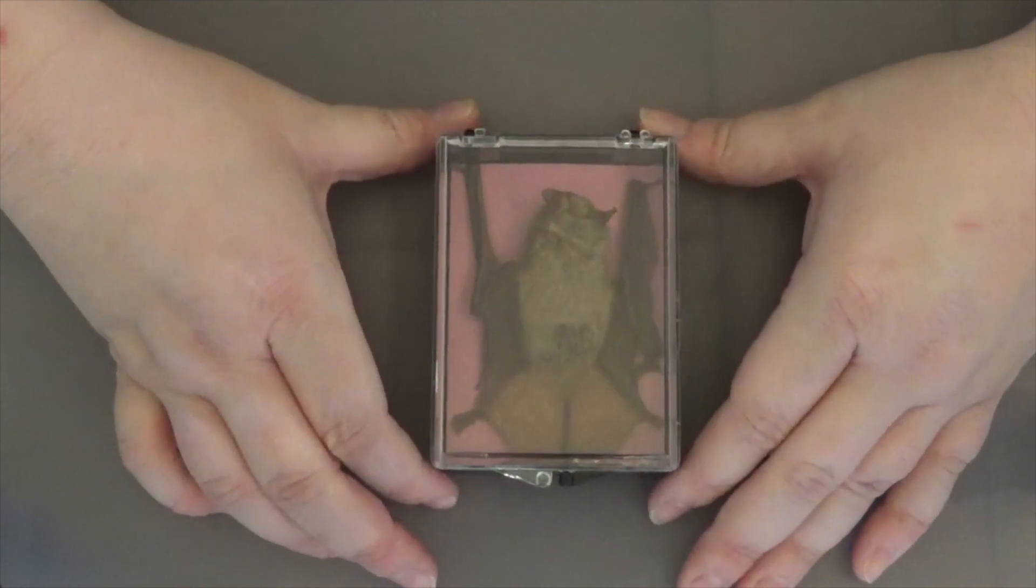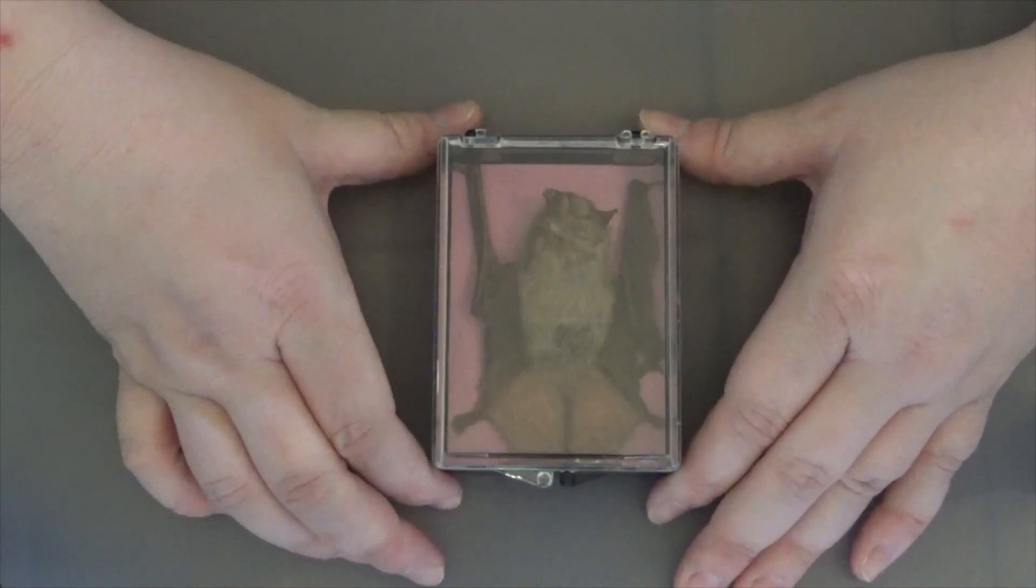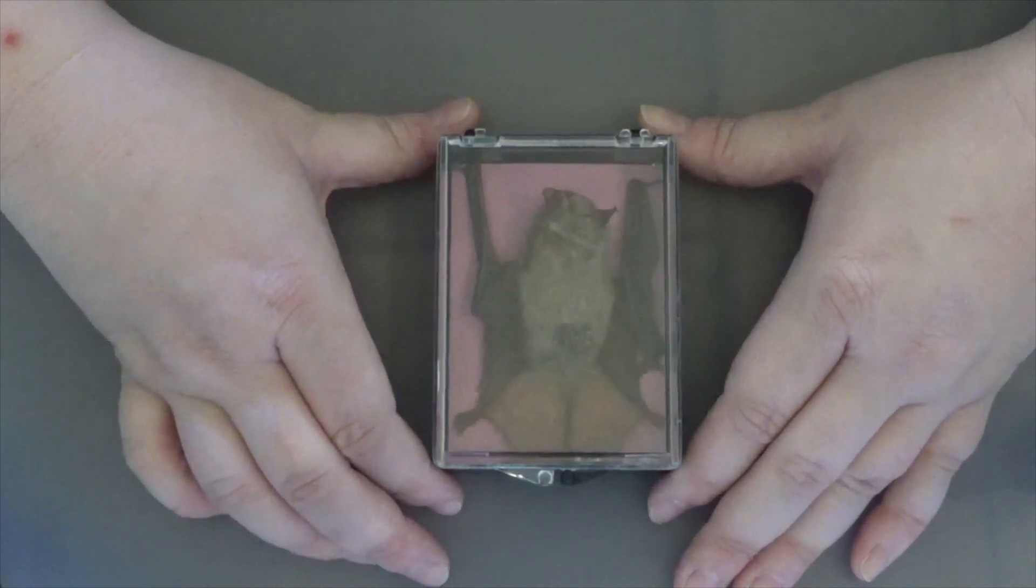Their babies are born alive, they do not hatch from eggs, and their babies drink their mother's milk. Those are all the signs that an animal is a mammal.